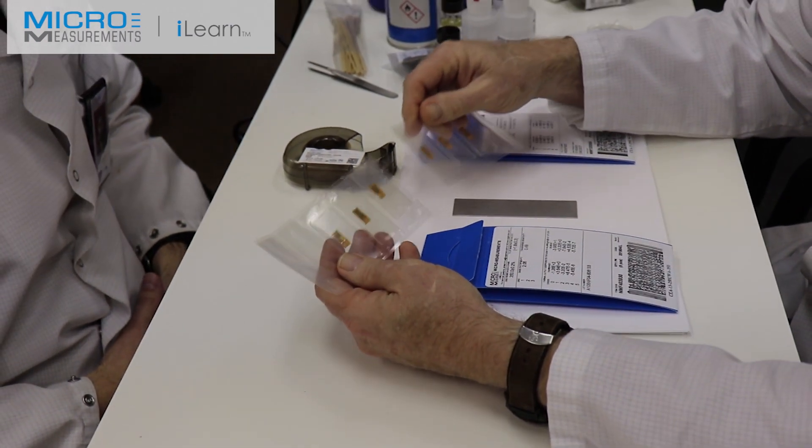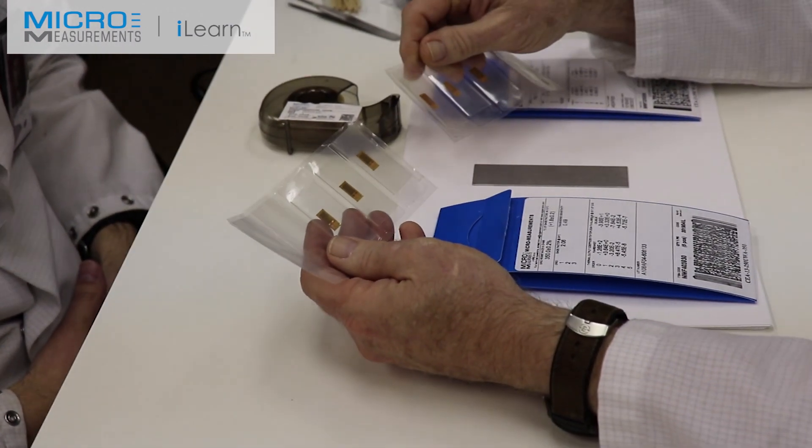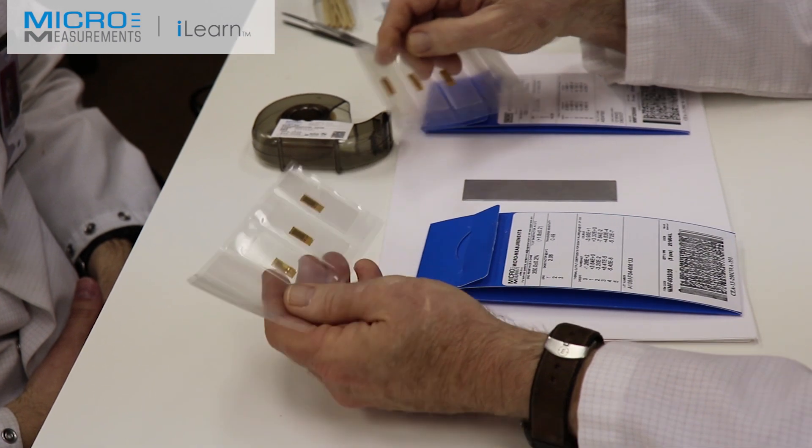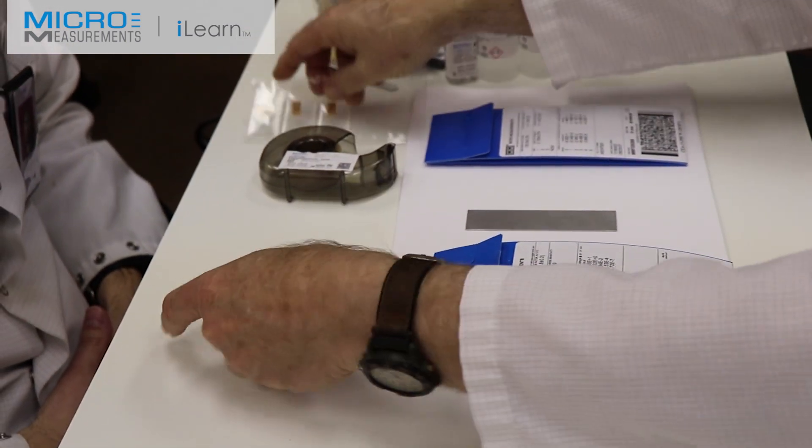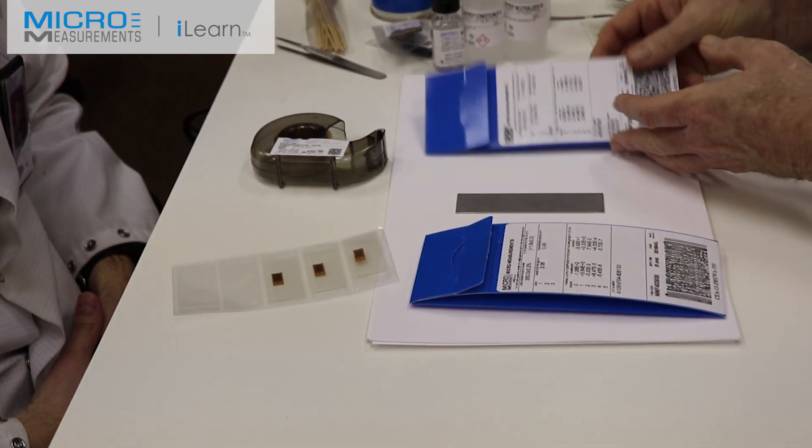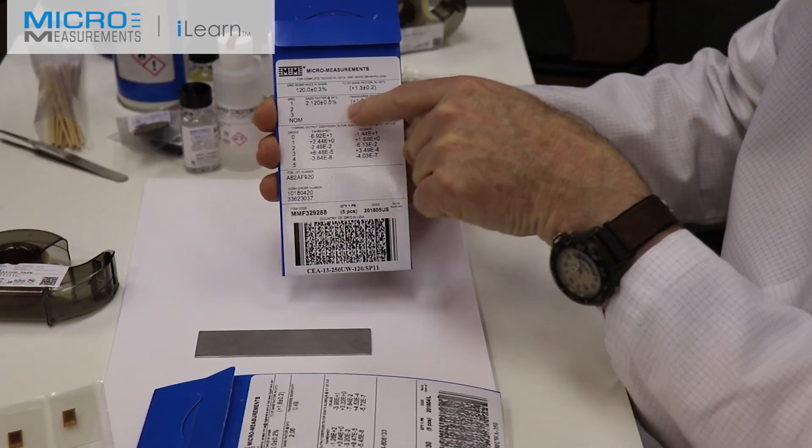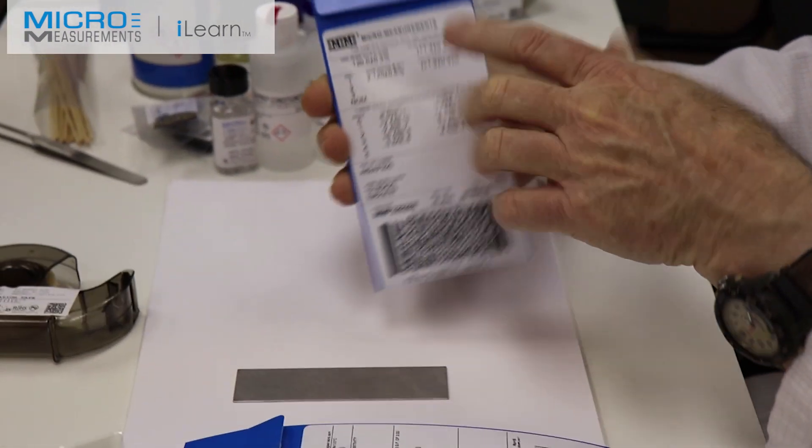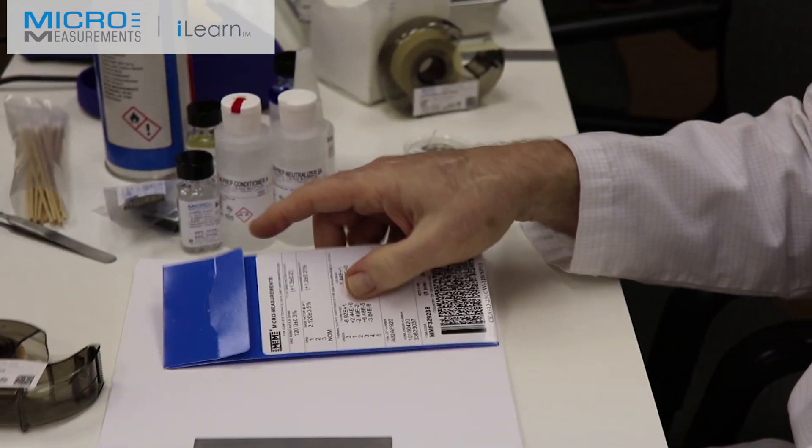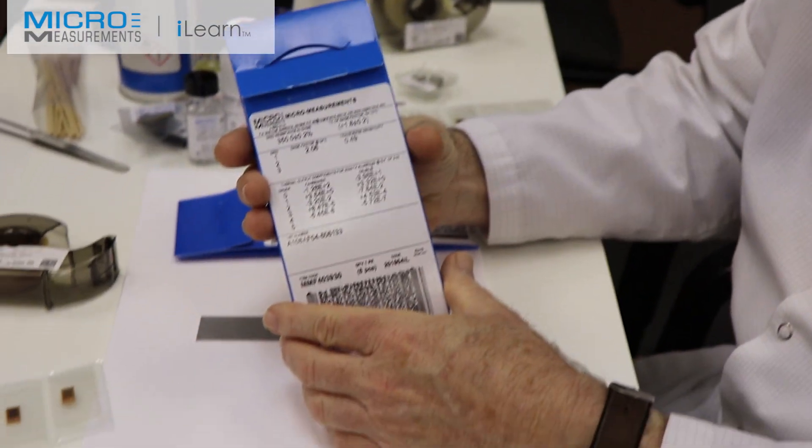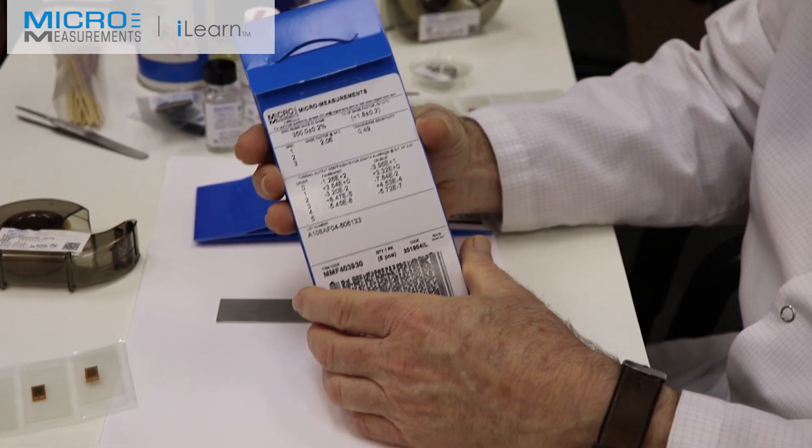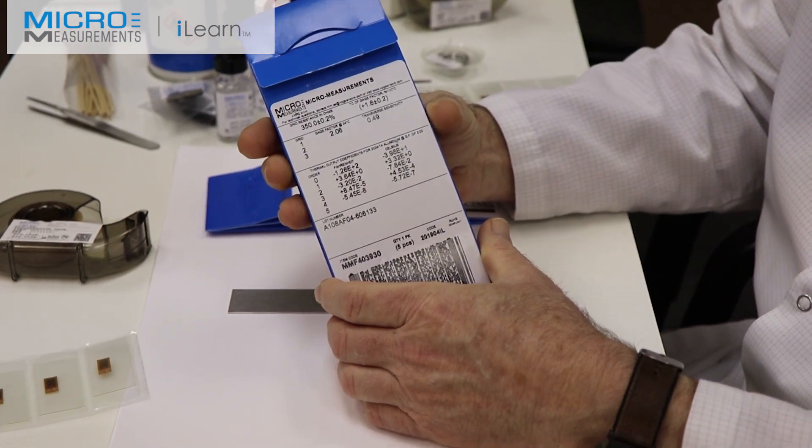The performance, the look, the feel, the handling, all the surface preparation, all the soldering, everything will be the same, including those things you're used to. If you look at the traditional gauge, you've got thermal output and gauge factor with a tolerance and gauge factor TC and all those things that are important for making your measurement. Those same properties are on the advanced sensor CEA series.